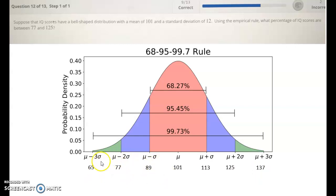Okay, so we can continue to fill those out. This would be the mean of 101 minus 2 times 12 and so on. So this gives us a much better picture in terms of IQ scores where people score.